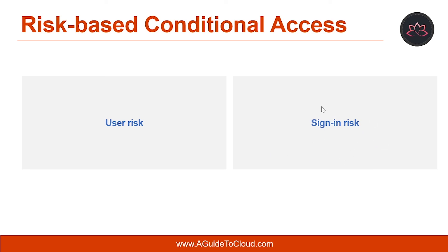The second type is sign-in risk. Most users have a normal behavior that can be tracked. When they fall outside of their norm, it could be risky to allow them to just sign in. You may want to block that user or just ask them to perform multi-factor authentication to prove that they are really who they say they are. A sign-in risk represents the probability that a given authentication request isn't authorized by the identity owner.